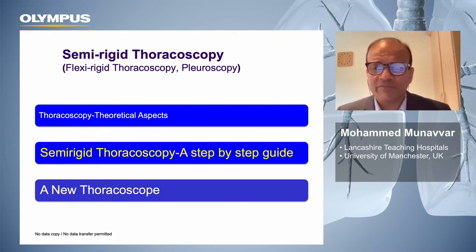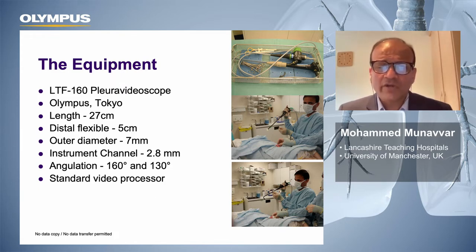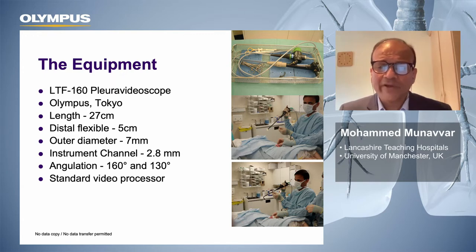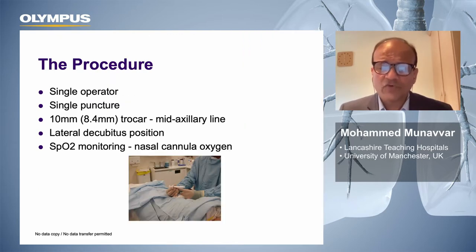Moving on to some practical tips and tricks when it comes to semi-rigid thoracoscopy. The existing equipment used is called a pleurovidioscope — the 260 series and 160 series. The thoracoscopy looks and feels exactly like a bronchoscope; working length is 27 centimeters, the last 5 centimeters being flexible. The outer diameter is 7 millimeters, instrument channel is 2.8 millimeters, angulation upwards is 160 degrees and downwards 130 degrees. It connects to standard video processors used in your unit for bronchoscopy, and the versions used have been autoclavable.